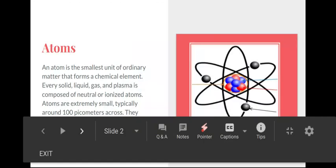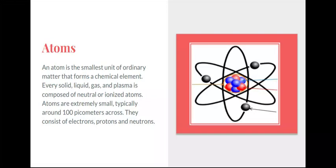Atoms. An atom is the smallest unit of ordinary matter that forms a chemical element. Every solid, liquid, gas, and plasma is composed of neutral or ionized atoms. Atoms are extremely small, typically around 100 picometers across. They consist of electrons, protons, and neutrons.